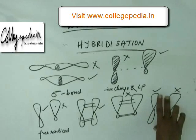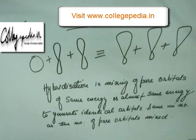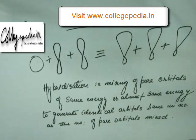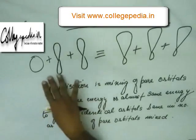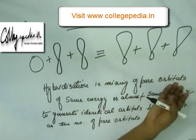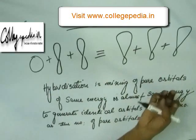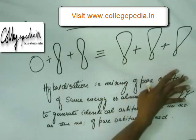Now let's move to the formal definition of hybridization. Although we have already understood what hybridization is, the formal definition is: hybridization is a process of changing the shape of pure orbitals. Hybridization occurs to an atom when the shape of different orbitals changes simultaneously - not one by one - and that process altogether is called hybridization.